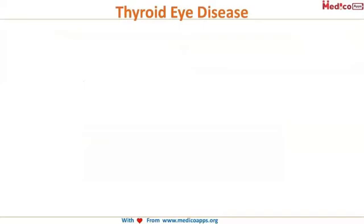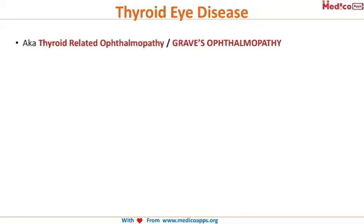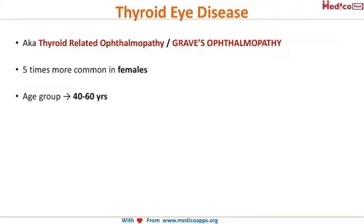Let's learn about an important and very common condition: Thyroid Eye Disease, also known as thyroid-related ophthalmopathy or Graves' ophthalmopathy. It is five times more common in females, around the age of 40 to 60 years.